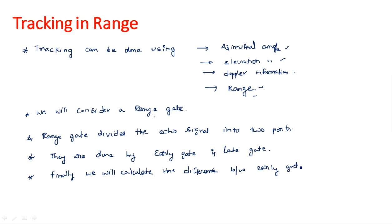We then find the difference between the early gate and late gate. When the difference between early gate and late gate is zero, we can say the range gate is exactly at the half position — meaning an equal amount of the echo signal is present in both the early gate and late gate. That means the target is exactly aligned with the radar system.